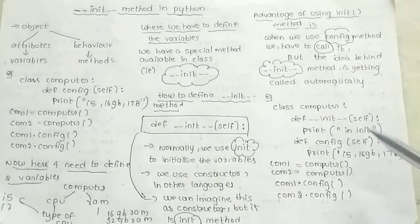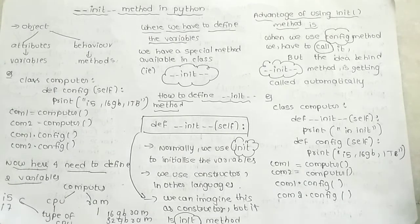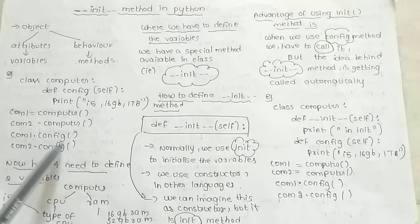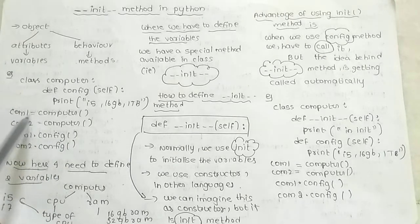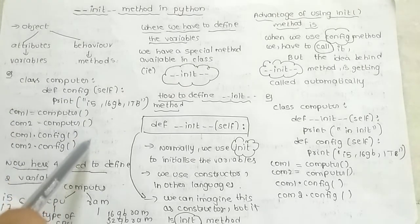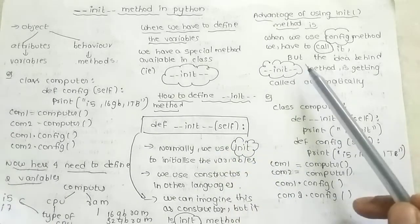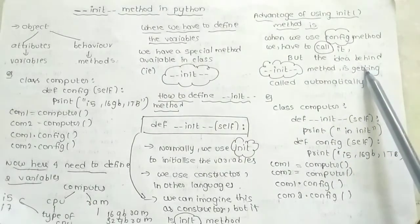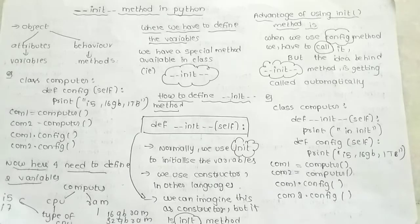If there is no constructor, this is the init method. What is the advantage of the init method? In general, we can define a method and call the method. But with init, it will be called automatically — that is the advantage.